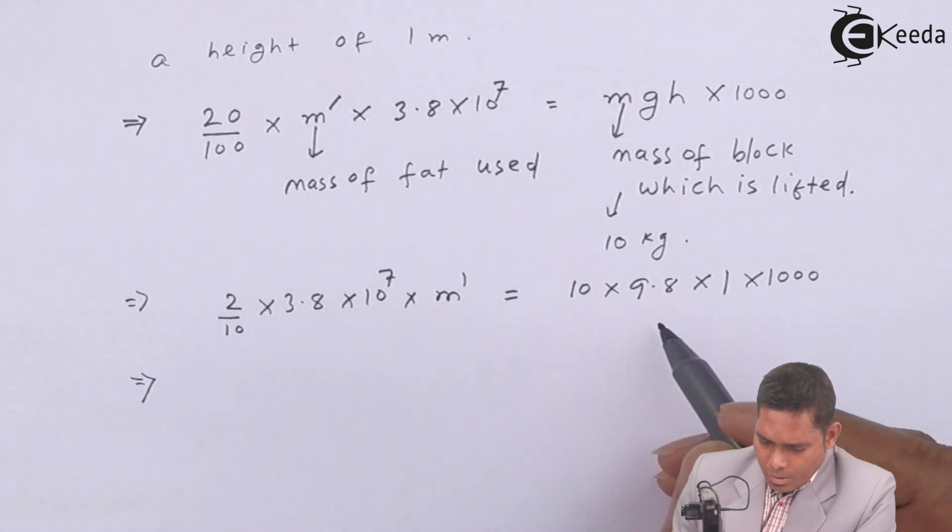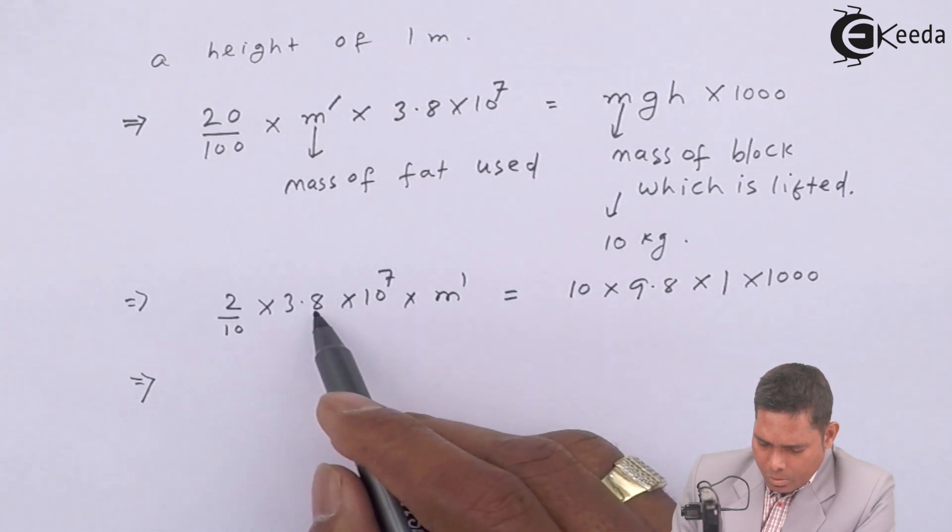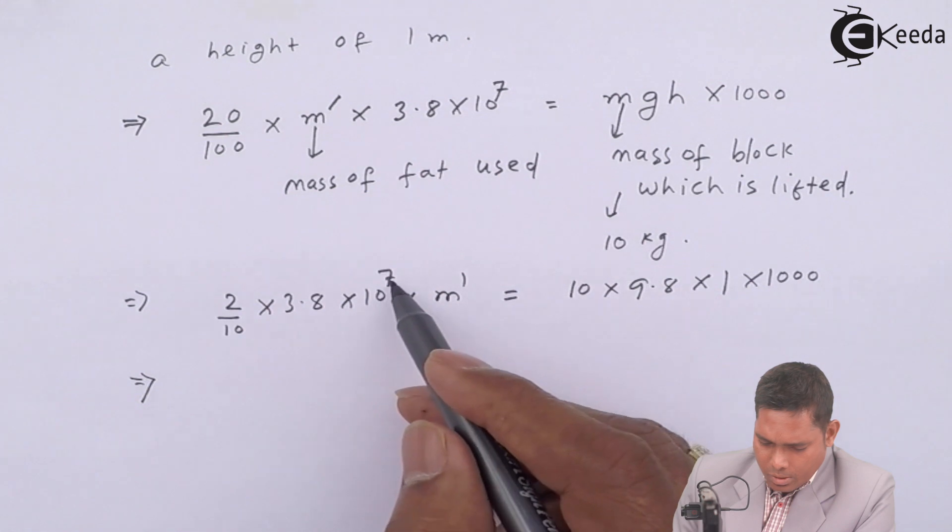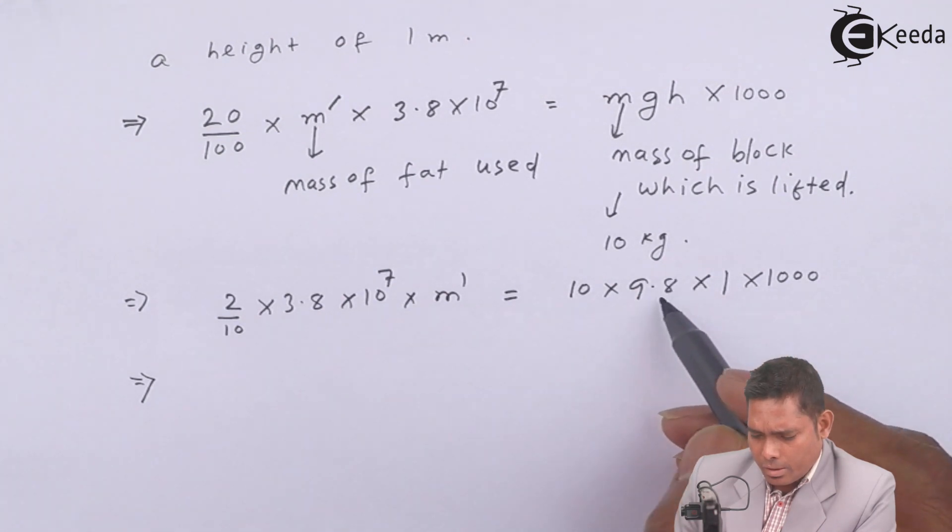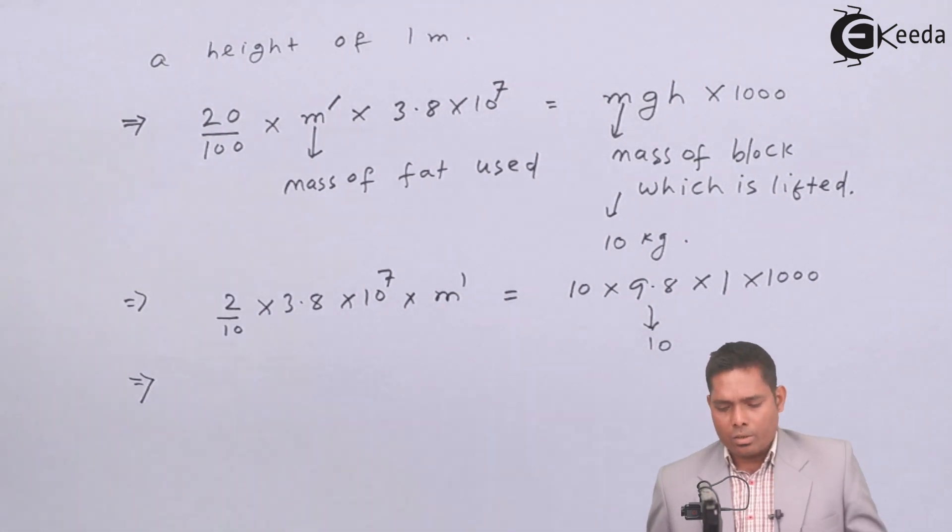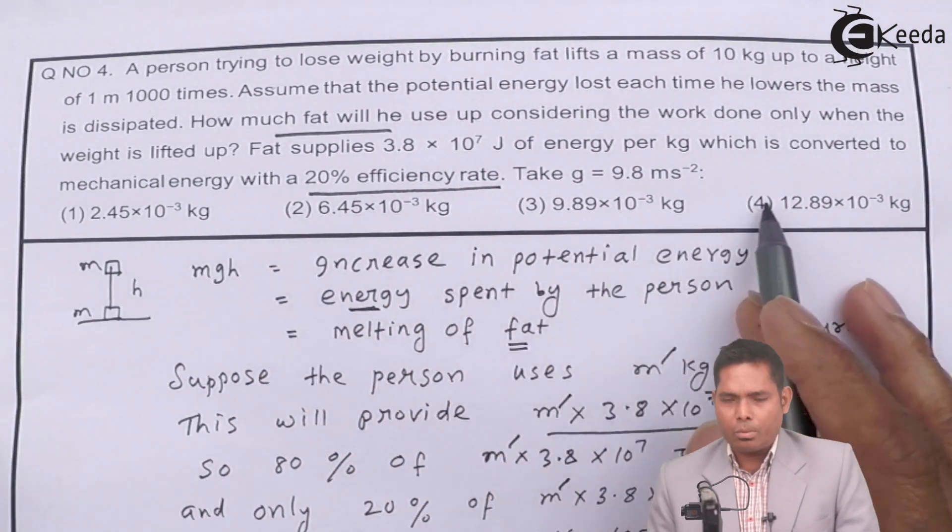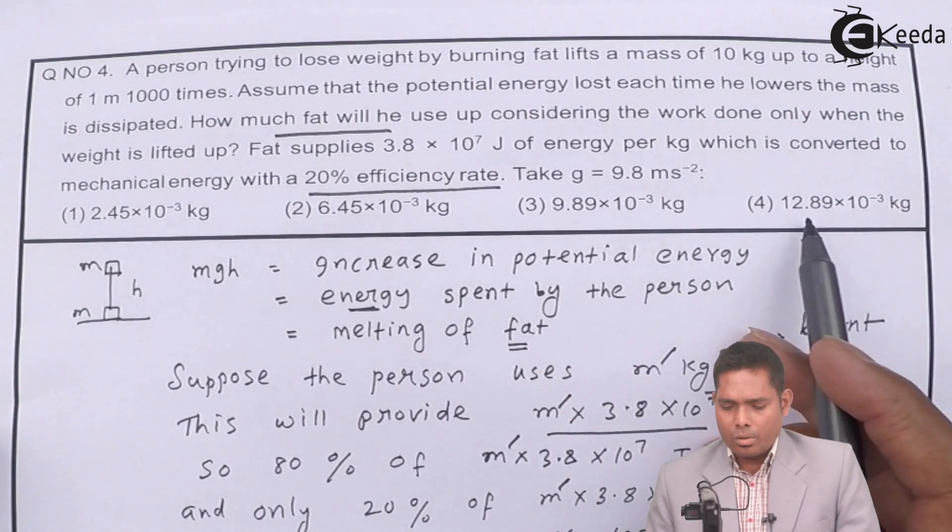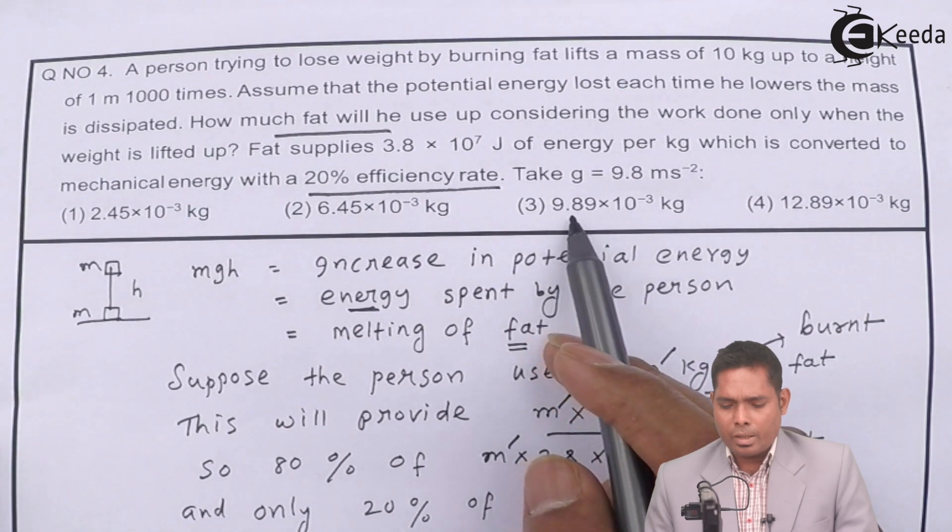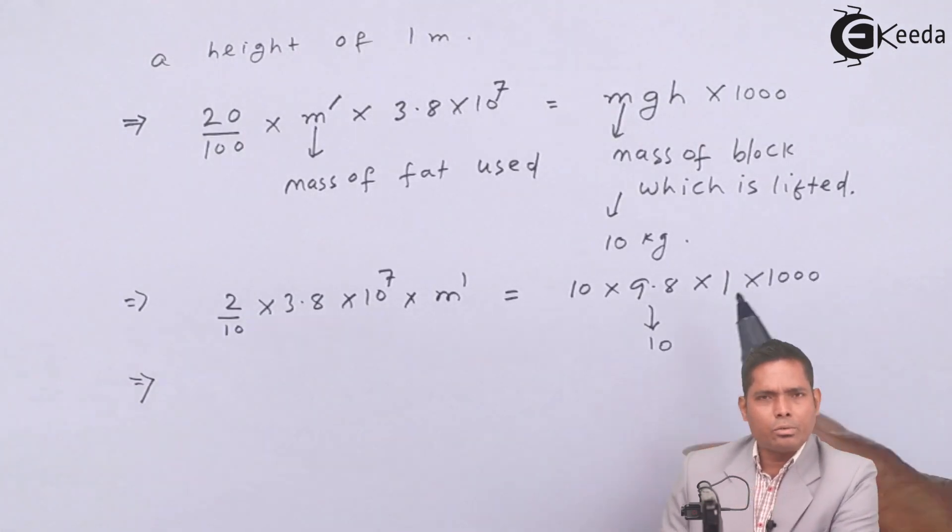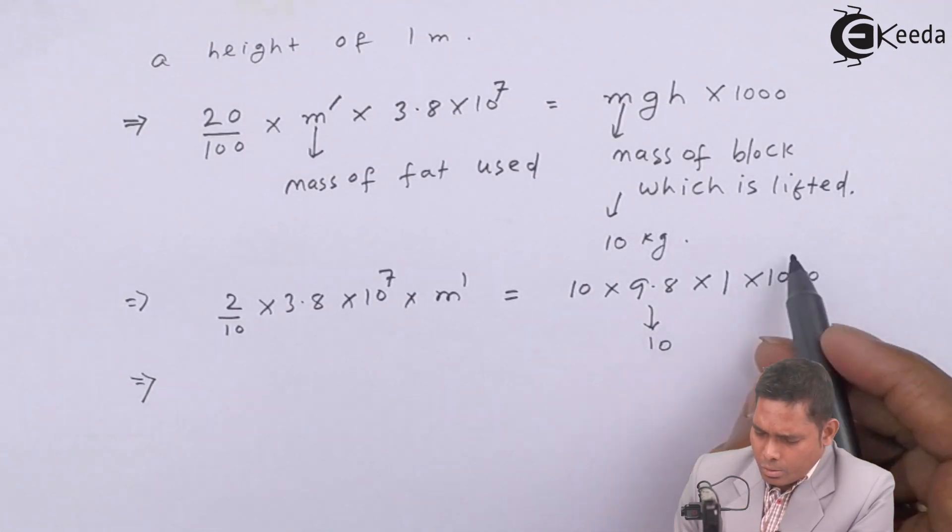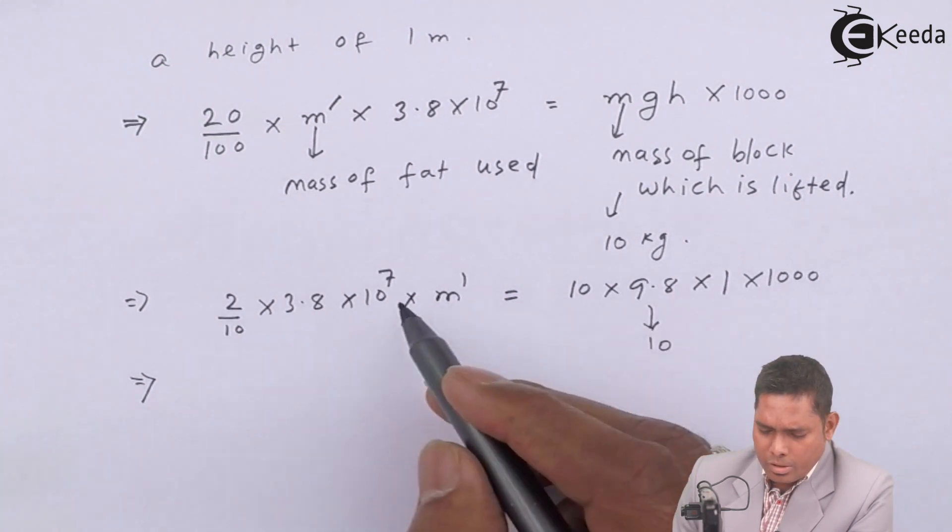From here, this is 10⁶. For approximation, I will take this 9.8 as also 10. For calculation, you can also take this as 10, because you have to get the option from here. You need not have to calculate the exact value. By that way, you save your time. So I will take 10 here. So it is 1000 and this 2×10⁵. Here this 10⁷. So this will cancel out and gives you 10² here.